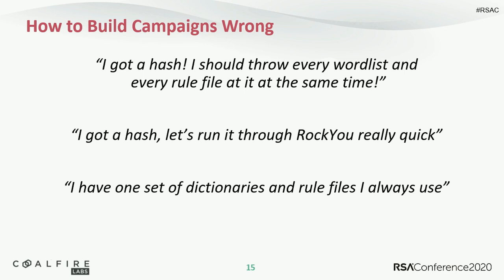So let's talk about how to build campaigns wrong. If you just say 'I got a hash, I should throw every word list and every rule file at it simultaneously' — I've actually seen this happen. Every rule file you add multiplies the number of candidates generated. With a million entries in your word list and a thousand in your rule file, that's a billion total candidates. Add the rule file a second time, it's a trillion. If you're running a campaign against bcrypt at 7,000 hashes per second, having a trillion entries isn't realistic — it's simply way too long.